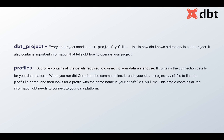The profile contains all the details required to connect to your data warehouse — in my case BigQuery — including your schema (dbt_test) and connection details. If it were Snowflake, you would put the Snowflake connection details there. Whenever you run dbt Core from the command line, it reads your dbt_project.yaml file, finds the profile name, and then looks into profiles.yaml, which contains all the information dbt needs to connect to your data platform.